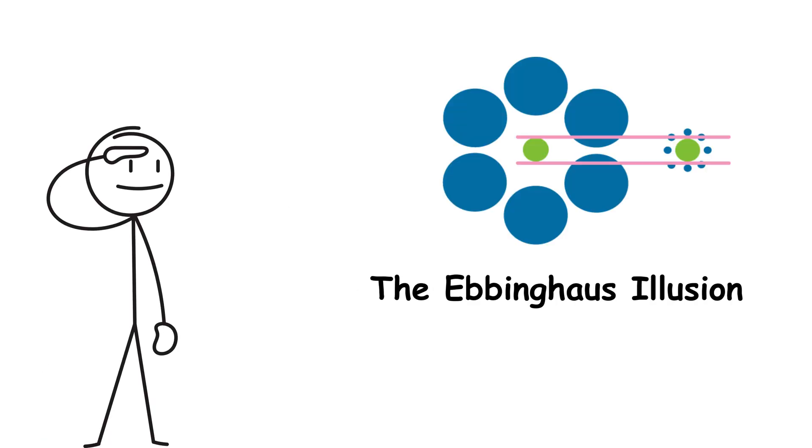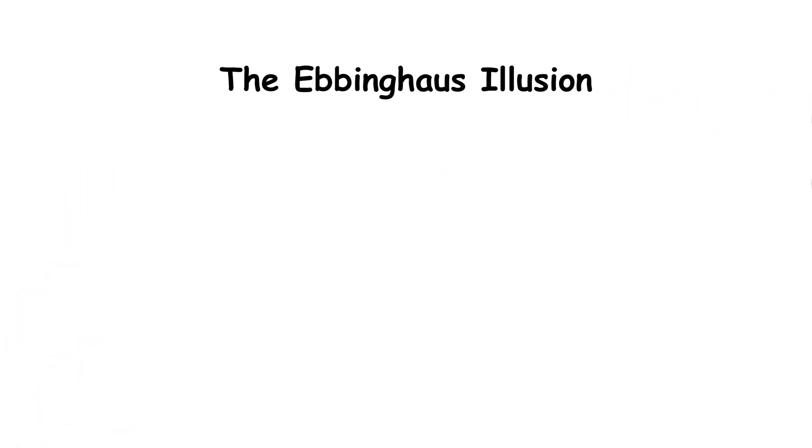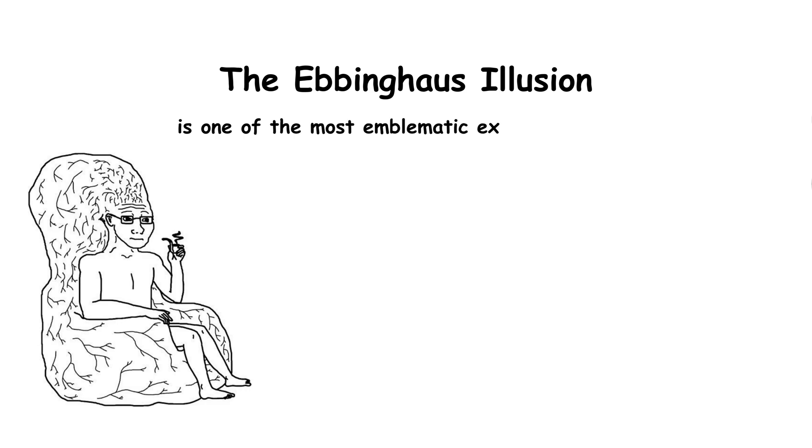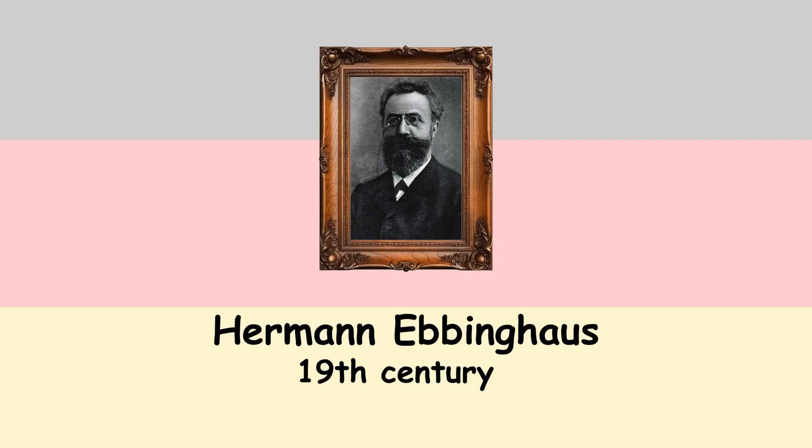The Ebbinghaus Illusion. The Ebbinghaus Illusion is one of the most emblematic examples of how visual perception can distort the geometric interpretation of figures. Discovered by German psychologist Hermann Ebbinghaus in the 19th century,